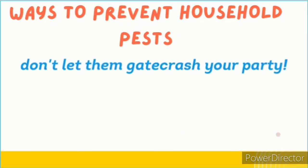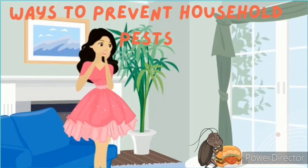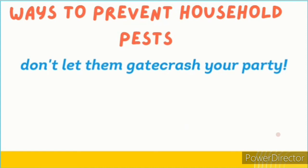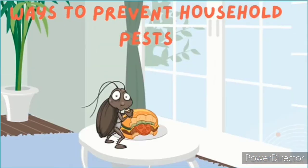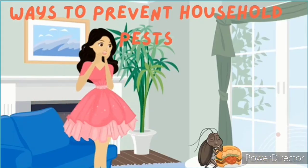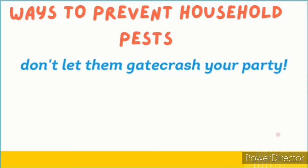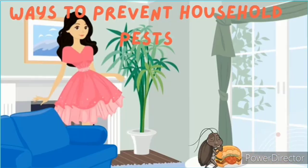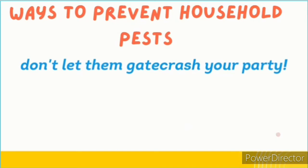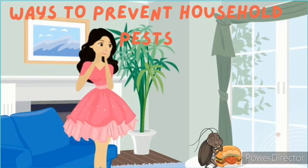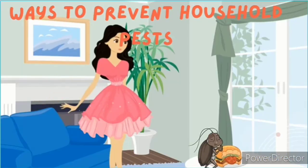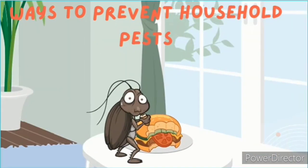Ways to prevent household pests: To prevent household pests, the breeding place must be destroyed. The breeding place is where they stay, so you must first destroy that place. Examples of breeding places are dirty areas like refuse areas, standing water, dirty sinks, soak-away pits, poor sewage systems, bushes around the house, dirty gutters, ponds, and empty containers with dirty water. Household pests like to stay in dark and dirty places.